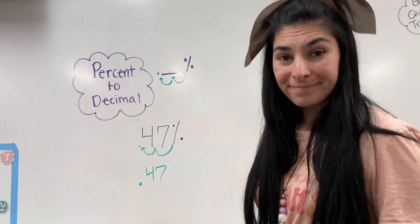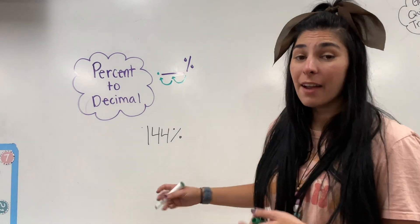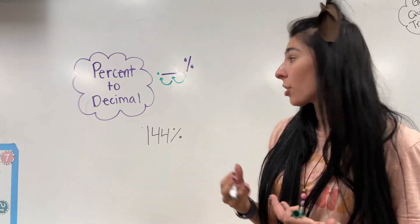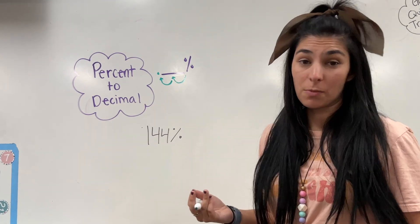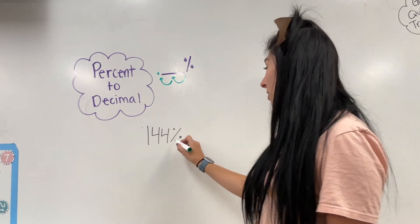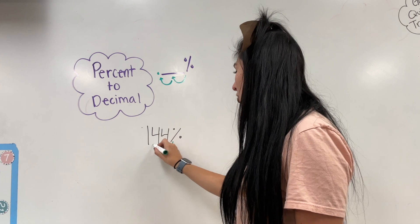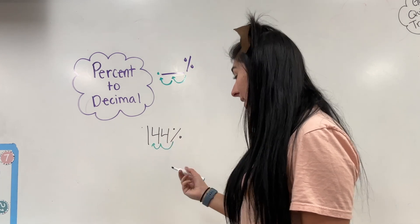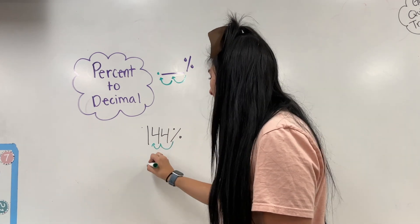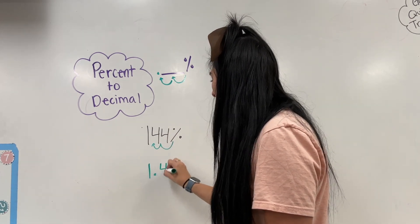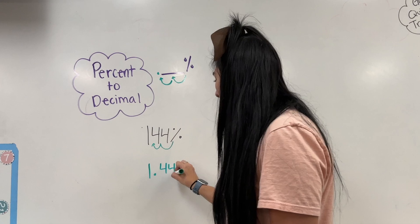Let's do another one. Let's say I have 144% that I want to convert to a decimal. I start with the percent, jump once, jump twice — that's where my decimal goes. So I have 1.44.